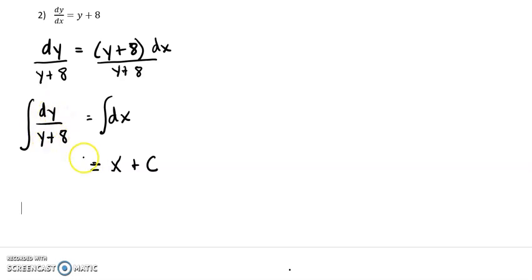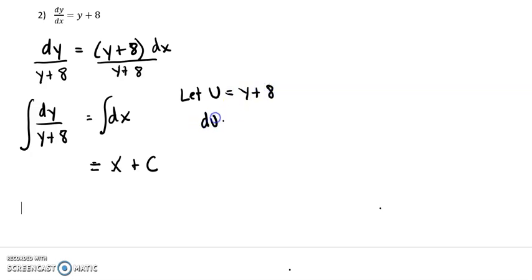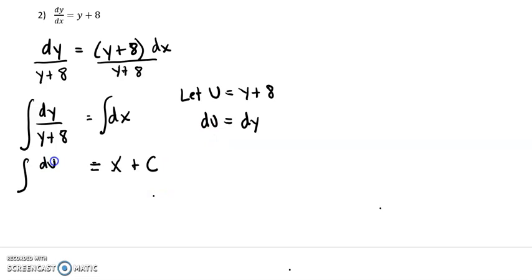The left side — dy over y plus 8 — looks trickier. Let's do a u-substitution. Let u equal y plus 8, so du equals dy. Plugging that in: dy is just du, and y plus 8 is just u.